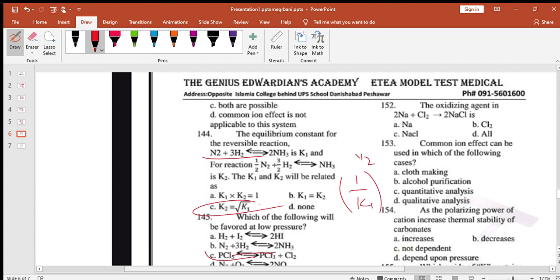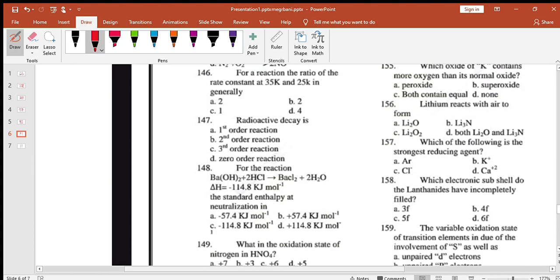Which of the following will be favored at low pressure? You see, if product number of moles. Pressure decrease to forward, pressure increase to reverse. For reaction, the ratio of rate constants at 35 and 25 Kelvin is generally 10 degrees increase to double. It's two times. Radioactivity decay is first order: N2O5 decomposition, radioactivity, brominating. Photolysis of chlorine is zero order.